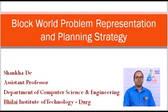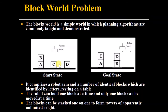Today we will discuss the block wall problem — how we can represent it — and we will take an example to describe the planning strategy. The block wall problem is the best example to explain planning algorithms in artificial intelligence. There are some identical blocks on the table and a robot arm. We can move these blocks using this robot arm. There are two states given: an initial state and a final state. We have to design a planning strategy so that we can move from the initial state to the goal state.